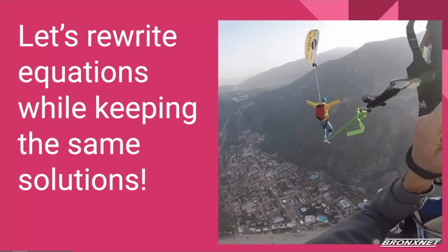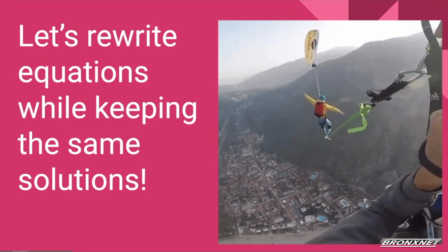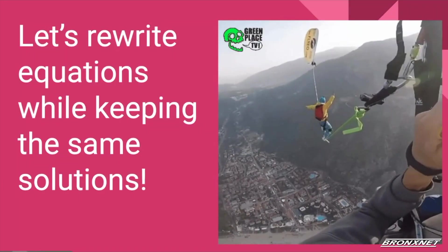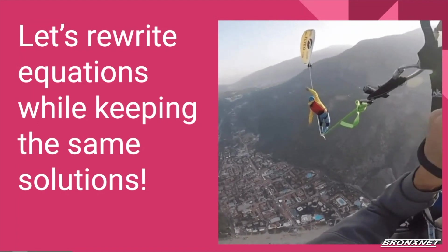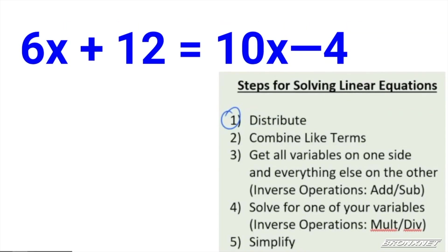We're rewriting equations and learning how to get to the solutions. Keep this picture in mind — this guy has to balance himself extremely well. If you look at his arms, they're doing the opposite of each other. What you do to one side, you have to do to the other to maintain balance and be successful. Take a look at the equation below. We're going to follow the same steps as yesterday. This one looks a little different, but these same steps apply — if a step doesn't apply, you just move to the next.